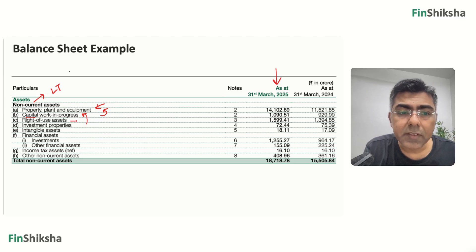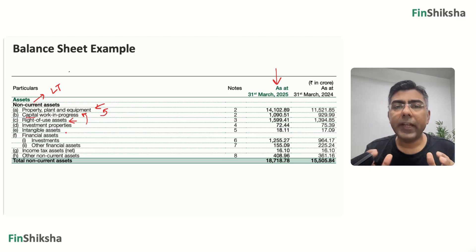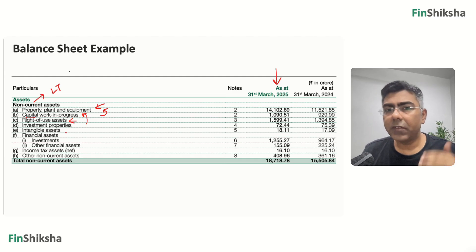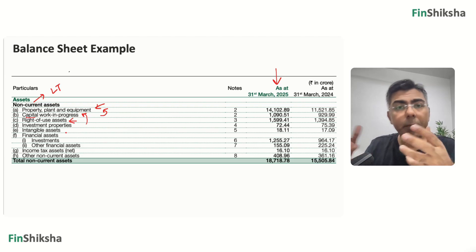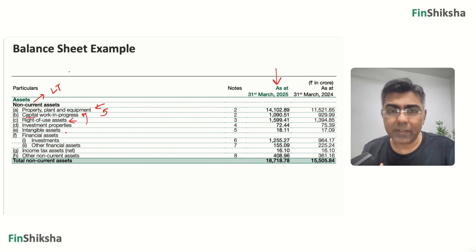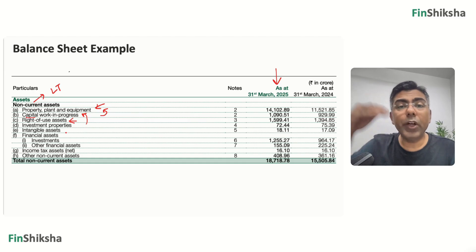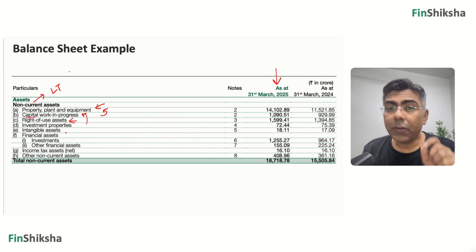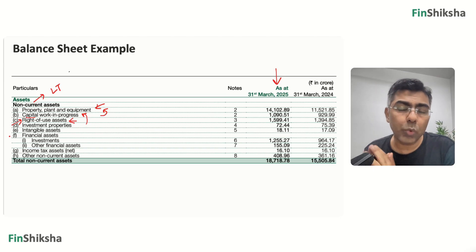Then you see a line item called right of use assets. This is a slightly tricky component that has come up in the last few years post 2020. Let's say DMART has a rented store. As per accounting principles, if this is a long-term operating lease, they are supposed to report it assuming they borrowed money and bought it — rather than showing it as a rental. Obviously this is notional, because they've actually rented the asset, but in accounting statements it must be denoted as if borrowing money and buying the asset. Because this is a notional asset, it is classified separately as a right of use asset — the operating lease converted into a financial lease.